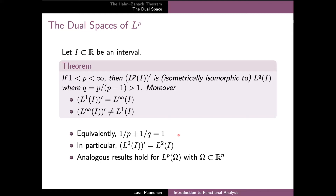On the other hand, if p is exactly equal to one, then the dual of L^1 is the space L^∞ of essentially bounded measurable functions. However, the dual of L^∞ is a strictly larger space than L^1.